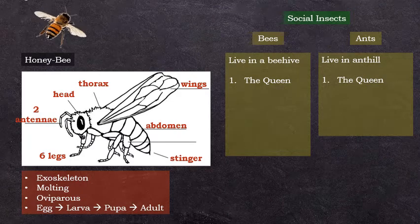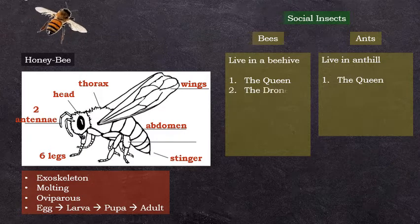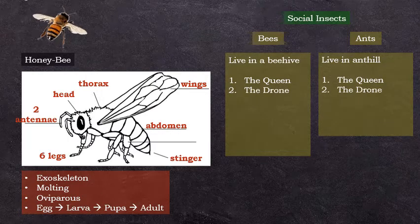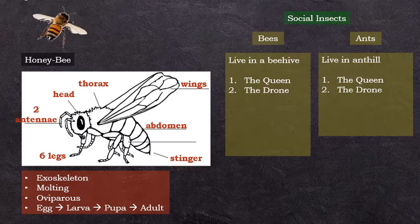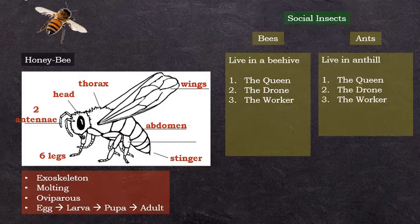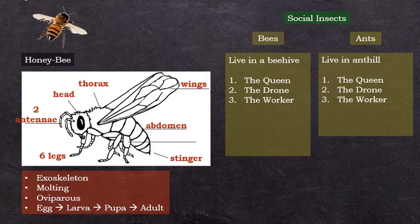The queen's function is to lay eggs. It is a female insect. The drones are the males and their job is to mate with the queen. The workers are the members that care for the colonies. They care for the young, they clean the colonies, they gather food, and they also defend the colonies.